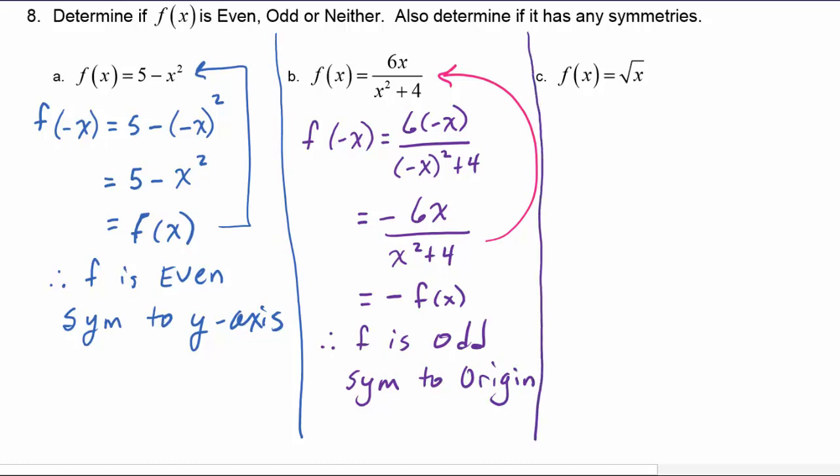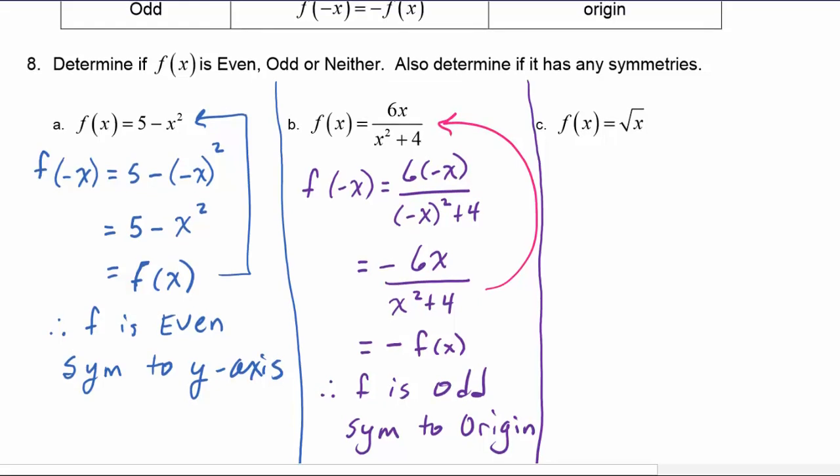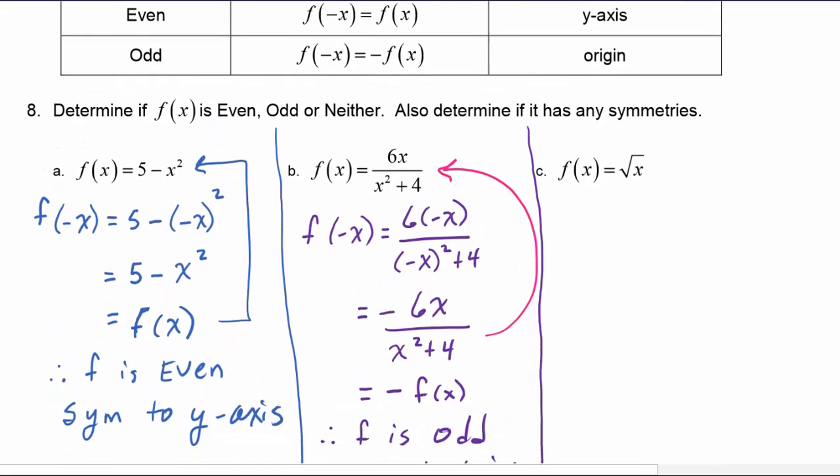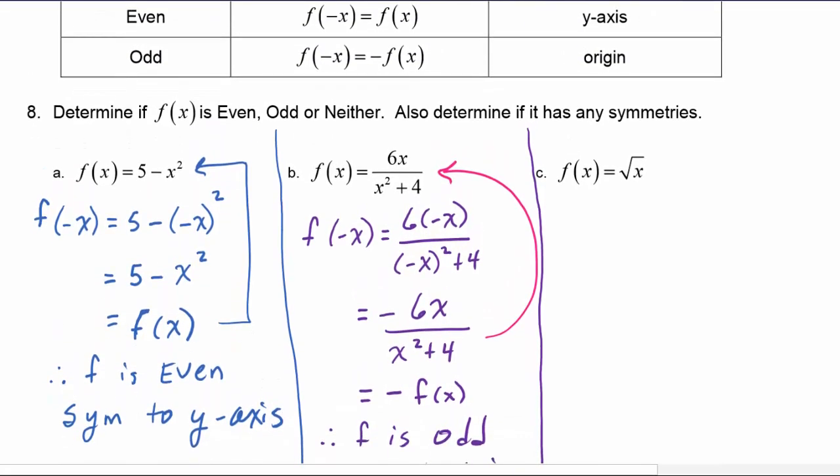Now if we compare these two to the tests, example a, remember we did f of negative x and it worked out to be f of x. So that's why we said it was even. In example b, f of negative x worked out to be the opposite of f of x. That's why f was odd. Now if we look at example c...